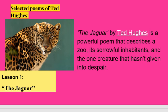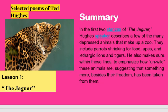The Jaguar by Ted Hughes is a powerful poem that describes the zoo, its sorrowful inhabitants, and the one creature that hasn't given into despair. Though he is in prison, he is still cheerful. In the first two stanzas, Hughes' speaker describes a few of the many depressed animals that make up a zoo — parrots, apes, and lethargic lions and tigers. He also emphasizes how unwild these animals are, suggesting that something more besides their freedom has been taken from them.